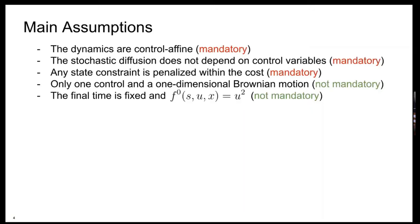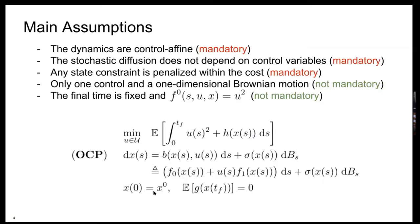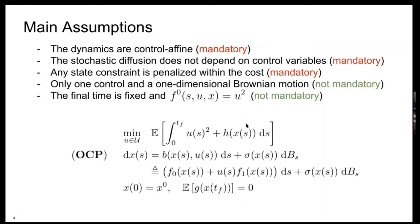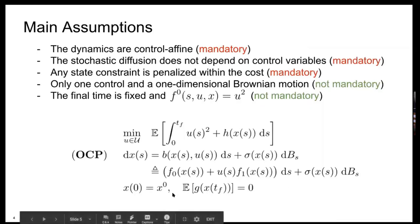For this talk, I will also be assuming two additional assumptions: one is that I will be taking only one control and a one-dimensional Brownian motion, and the cost I choose will be a minimum energy type cost. Such that the final optimal control problem takes a form where we have a cost containing penalization through an appropriate penalization function h of all the state constraints — you might think about collision avoidance constraints — and the dynamics have a nominal part with only one control, control-affine, and a stochastic diffusion that only depends on X, with initial and final conditions.